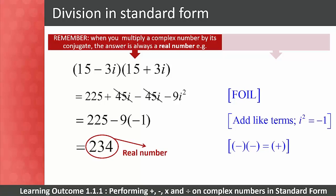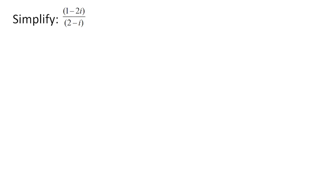Let's look at this division problem: one complex number divided by another. To solve this, we multiply by the conjugate of the denominator. The denominator is the bottom term, and the conjugate means we change the sign of the imaginary part.